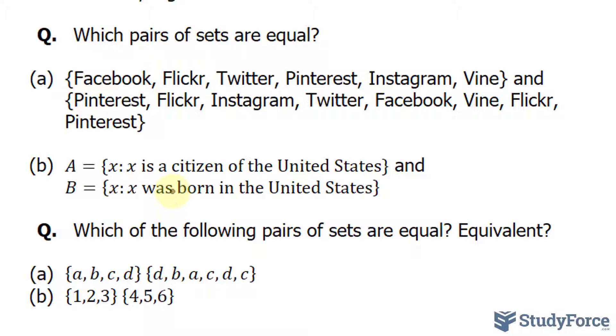Now, of course, you can be a citizen of the U.S. even though you weren't born there. You may have immigrated there. Because of this, they're not equal. Think about it. You may have been born elsewhere, and you immigrated to the States. So you'd belong in set A as an element there, but you wouldn't be an element in set B.